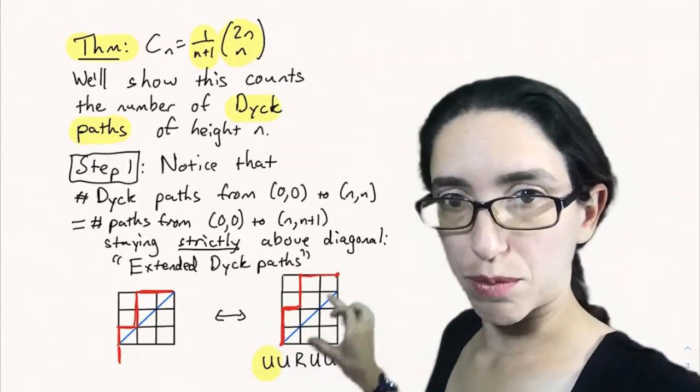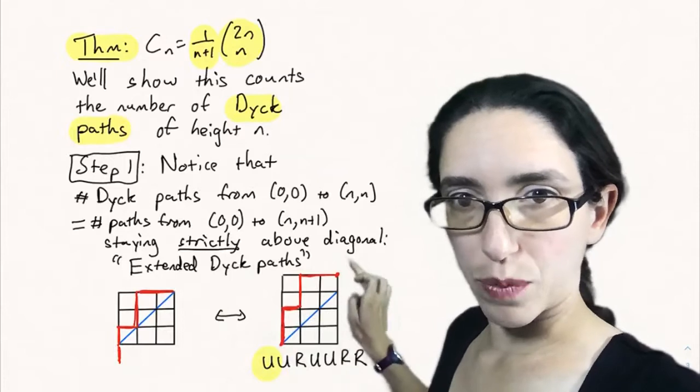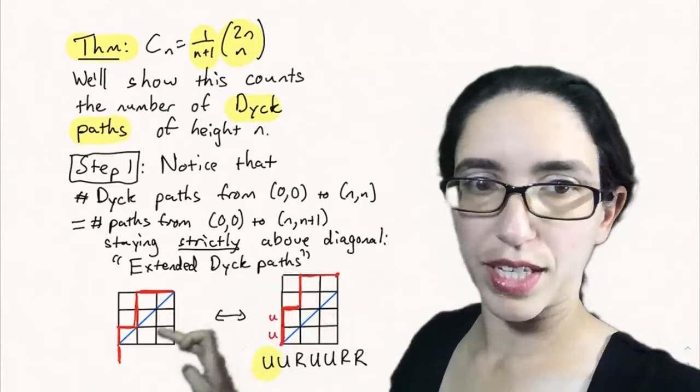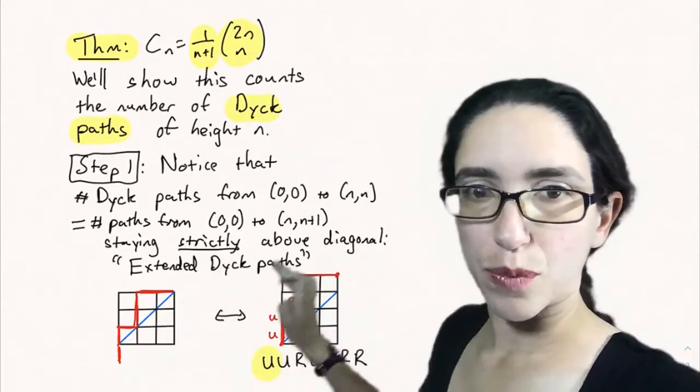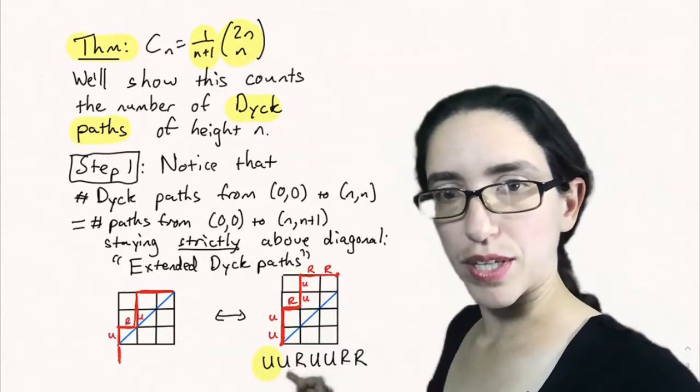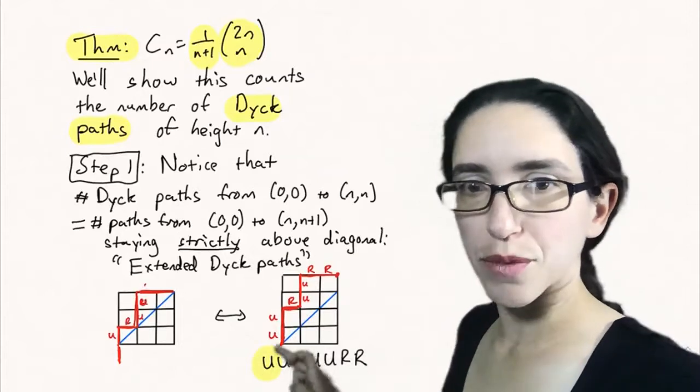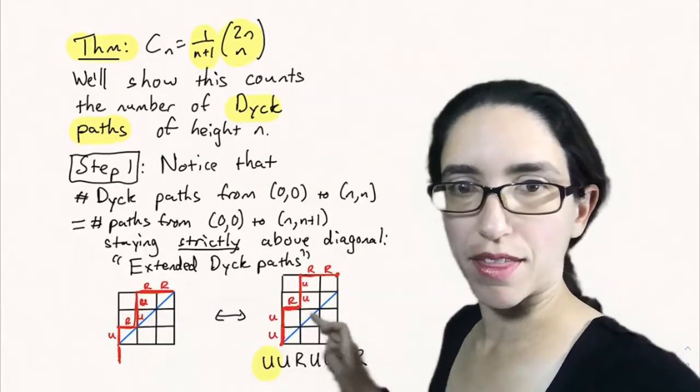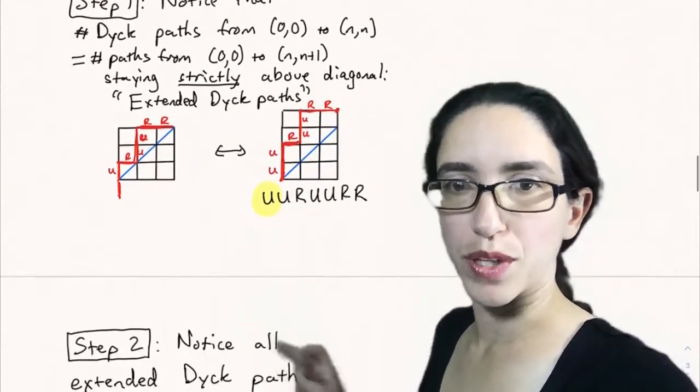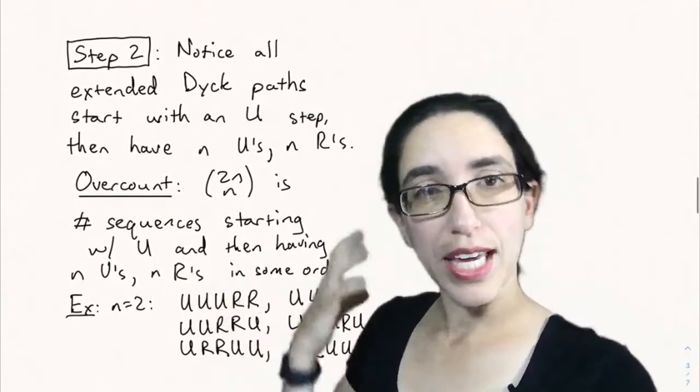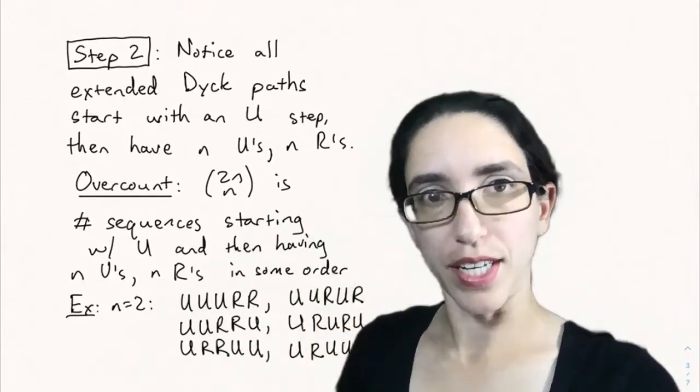It'll never touch that blue line. And since we shifted it up by one, it ends at this (n, n+1). So there's a bijection here between Dyck paths and extended Dyck paths. We're going to look at extended Dyck paths. We're also going to sometimes think of the sequence of ups and rights that determine this sequence, this up, up, right, up, up, right, right. Notice to get from this Dyck path to the extended Dyck path, we just put a U at the beginning.